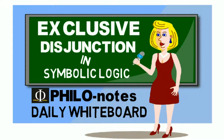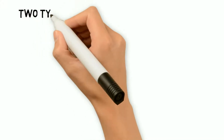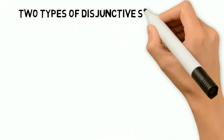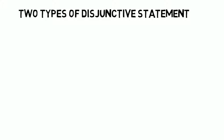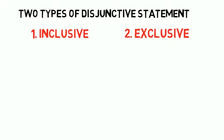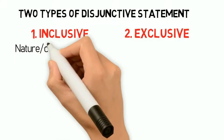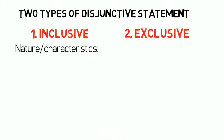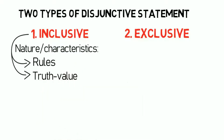But before I start discussing this topic for today, let me do a quick recap of the previous discussion. I have mentioned that there are two types of disjunction or disjunctive statements, namely inclusive and exclusive disjunction. In the previous edition I discussed the nature and characteristics of an inclusive disjunction, including its rules and how to determine its truth value. Now in today's edition I will focus on exclusive disjunction.